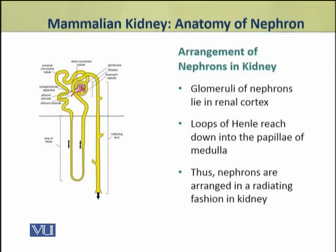The glomeruli of nephrons lie in the renal cortex, while the loop of Henle reaches down into the papilla of the medulla.